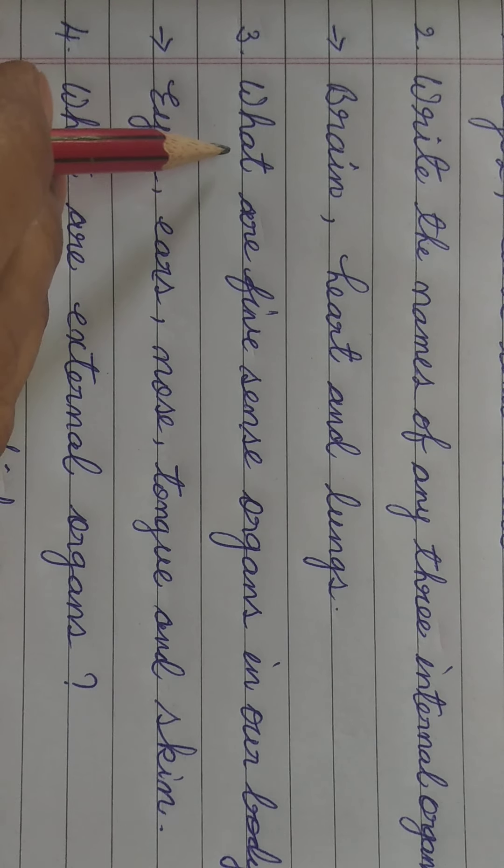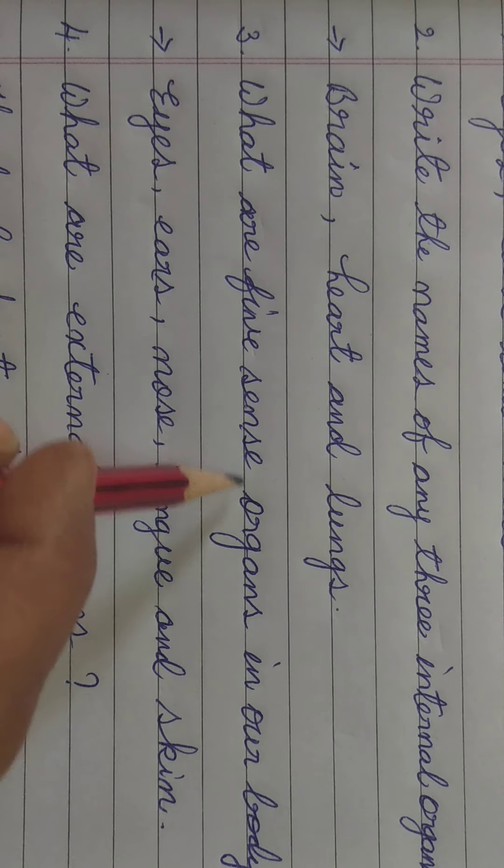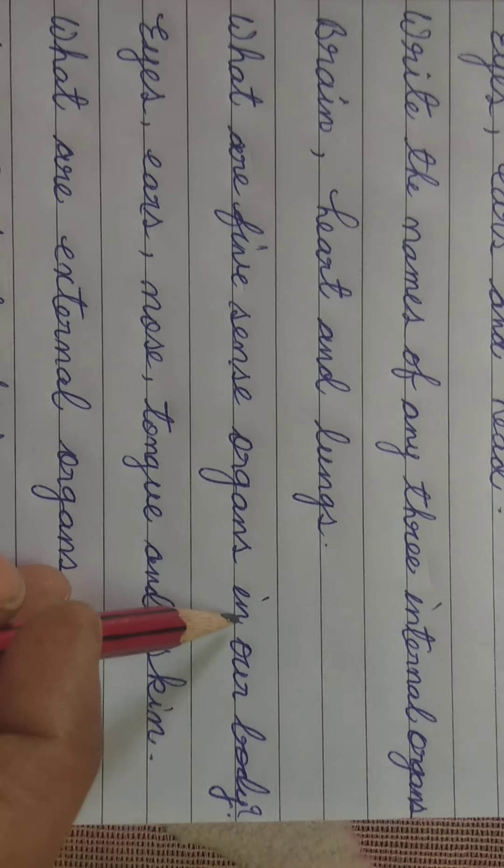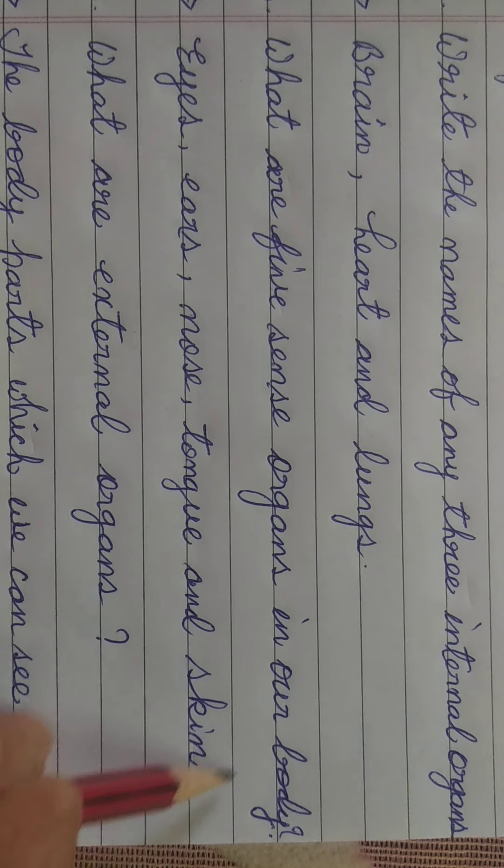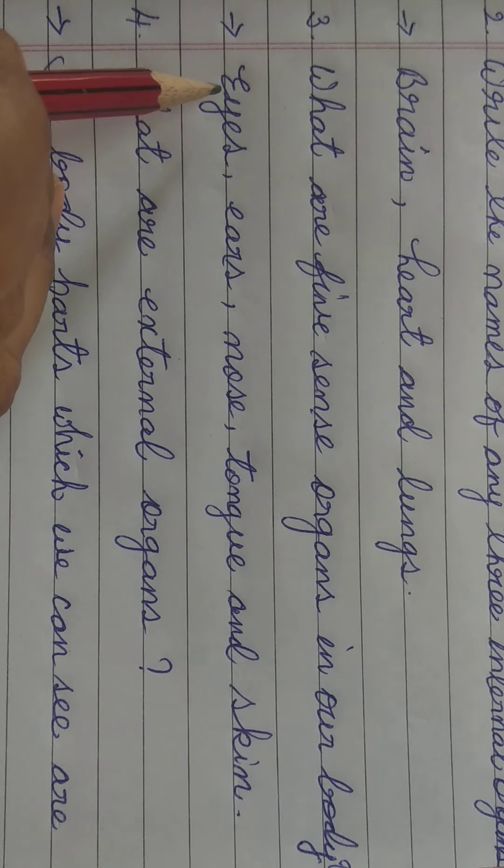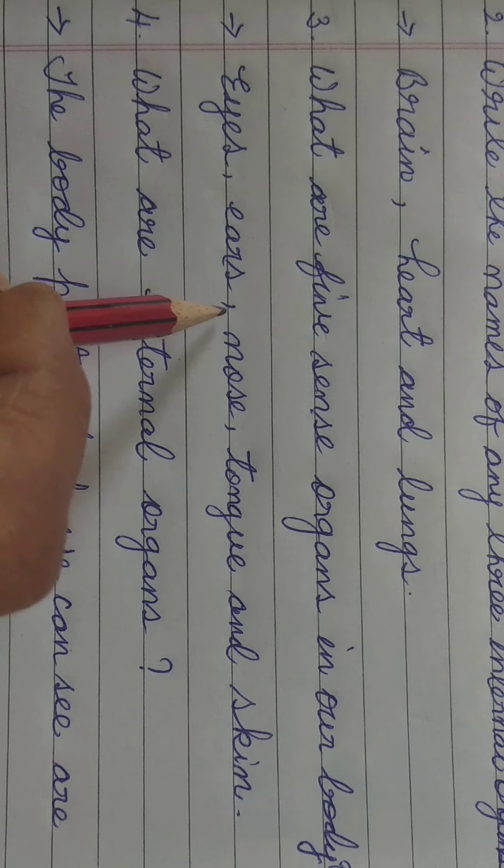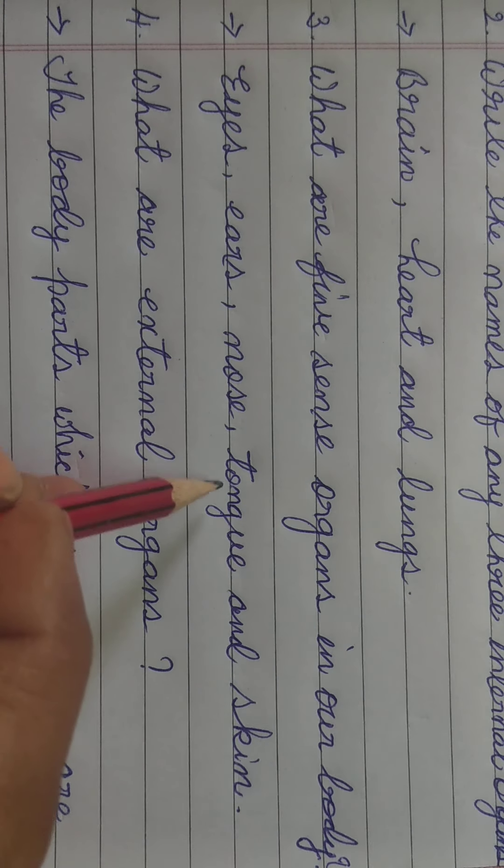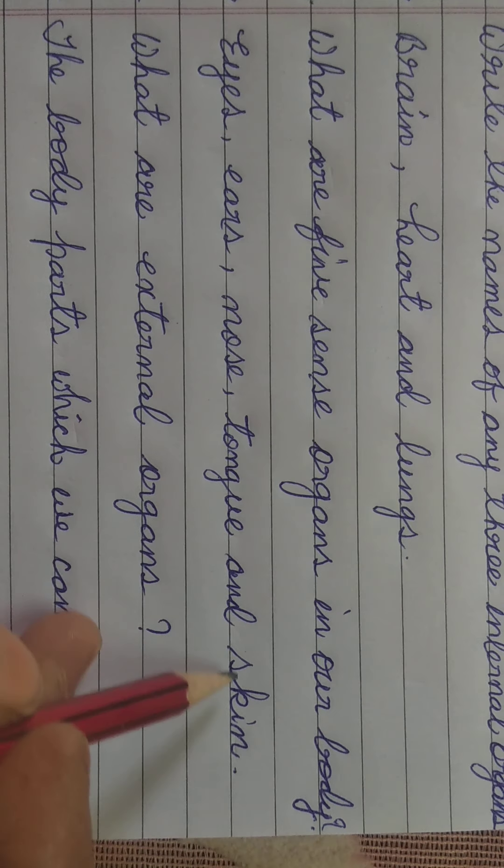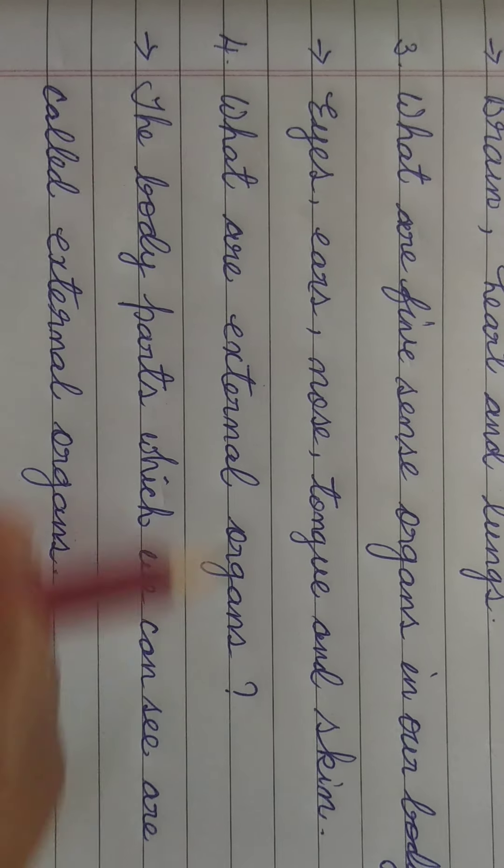Third one, what are five S-E-N-S-E sense O-R-G-A-N-S organs in our body? Apne body me five sense organs kya hai? They are E-Y-E-S eyes, E-A-R-S ears, N-O-S-E nose, T-O-N-G-U-E tongue and S-K-I-N skin. These are five sense organs.